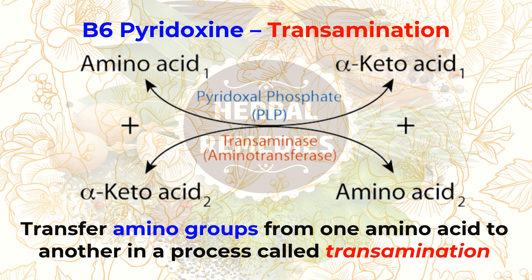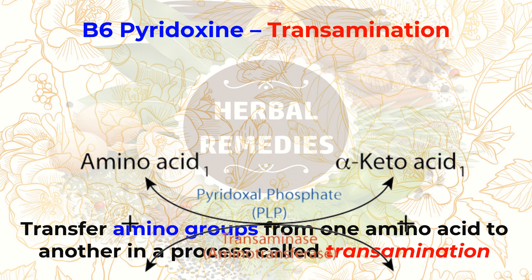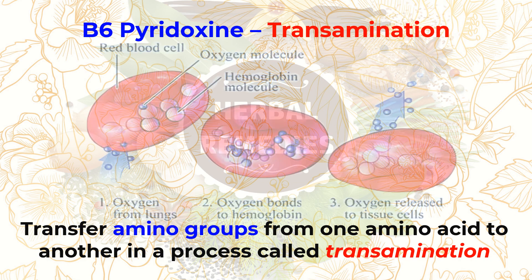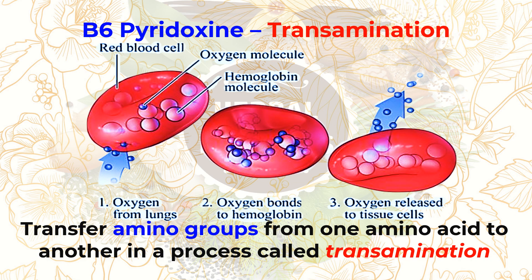PLP also functions in the synthesis of heme, a part of hemoglobin. Some forms of vitamin B6 also help hemoglobin pick up and release oxygen.